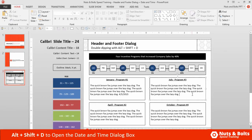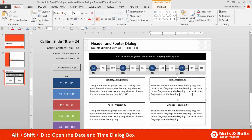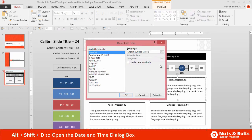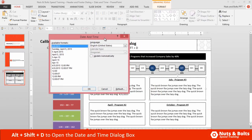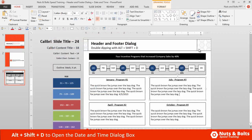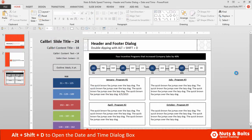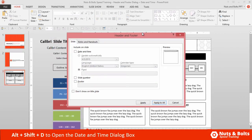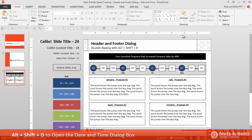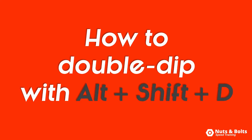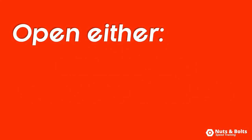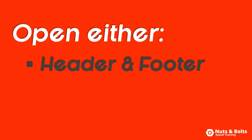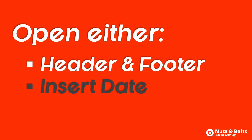You need to be within a text box or some object that can take text for this Alt Shift D keyboard shortcut to work and open up the date and time dialog box. If you're not — if I just click out and click into the workspace — Alt Shift D will double dip and come back to the header footer dialog box. That's how to double dip on Alt Shift D to either open the header footer dialog box to add or remove headers and footers, or to open the insert date and time dialog box to insert the current date or time based on your computer's time settings.